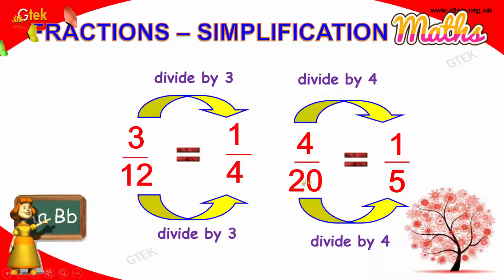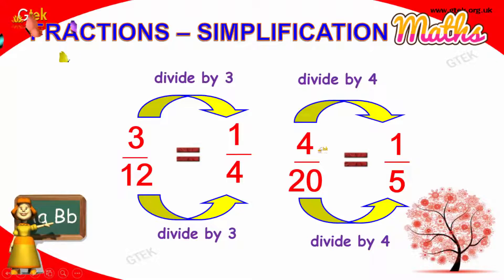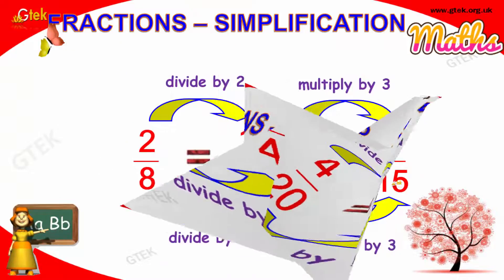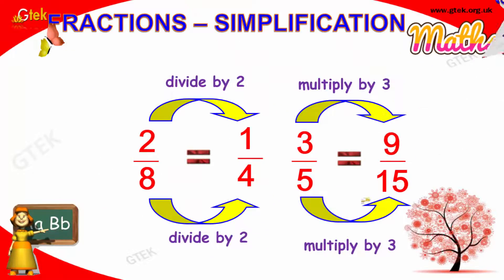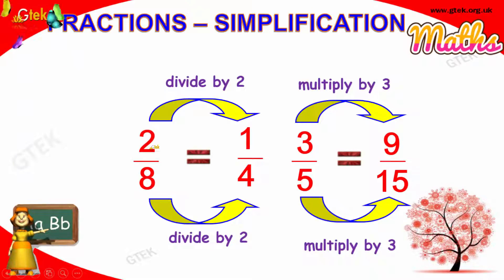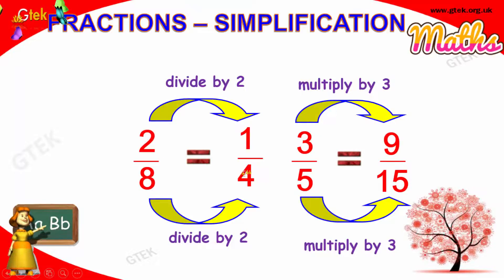Four divided by twenty — dividing both numerator and denominator by four gives one divided by five. Now, two divided by eight — two divided by two gives one, and eight divided by two gives four. So, you get one divided by four. Four times two is eight, and one times two is two.